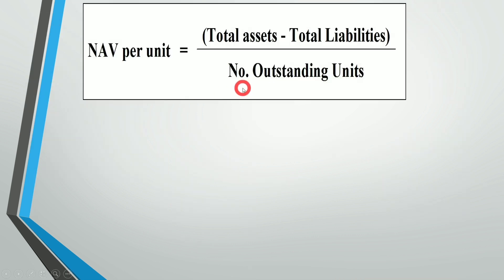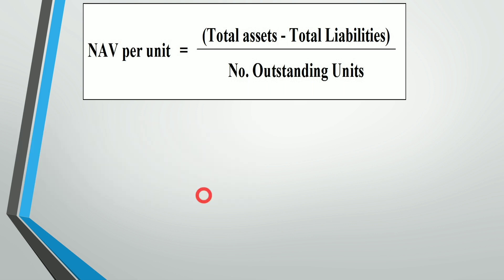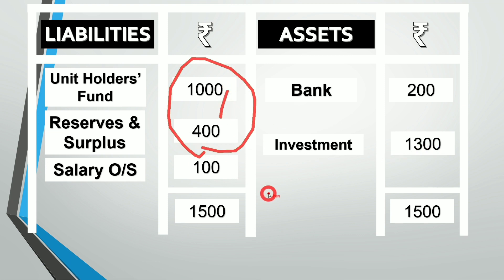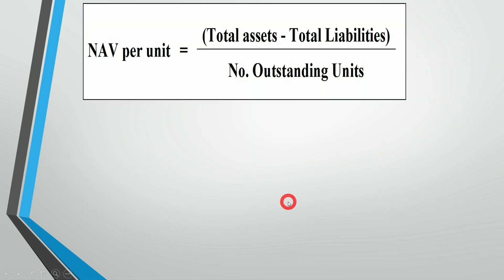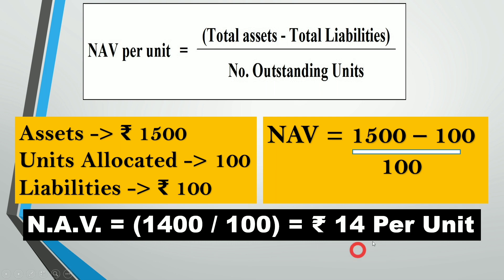NAV per unit is now: total assets of rupees 1,500 — that is rupees 1,300 investments plus rupees 200 cash — minus total external liabilities of rupees 100 (salary outstanding only, since reserves and surplus is not an external liability), divided by 100 outstanding units. So: 1,500 minus 100 divided by 100 equals 1,400 divided by 100, which is rupees 14 per unit.